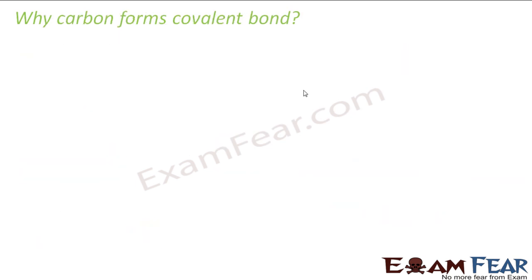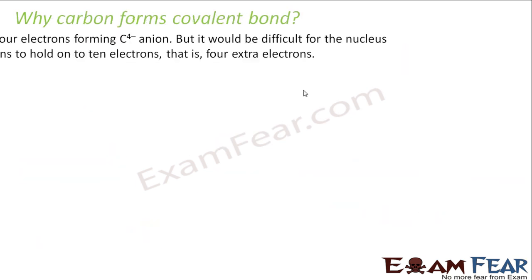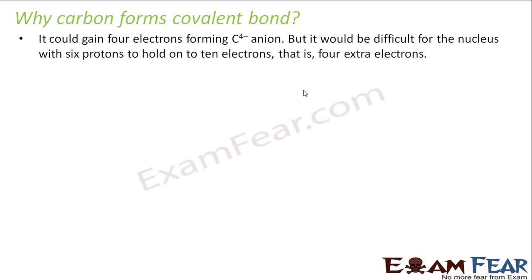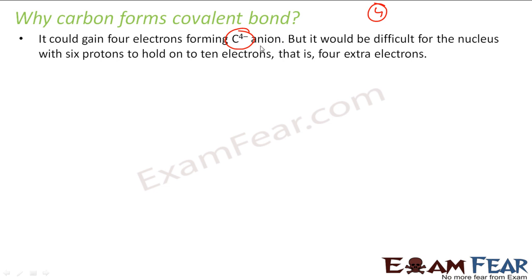Now I will explain why carbon forms a covalent bond. Since it has four electrons in the outermost shell, it can gain four electrons and become a C4- ion, but this will be difficult. The reason is that nobody will give it four electrons, but actually that is just one way to understand it — it will be difficult for carbon to hold ten electrons.